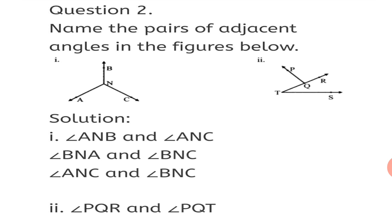For sub-question 2: Angle PQR and Angle PQT is the only pair of adjacent angles, since QP is the common arm — always name the arm starting with the vertex — and they have separate interiors as well.